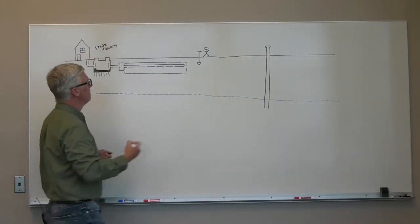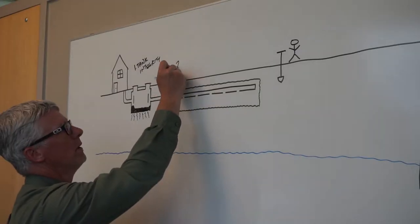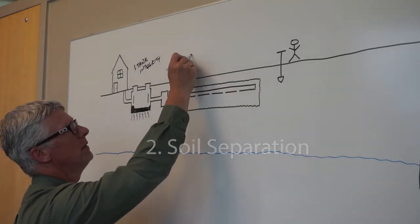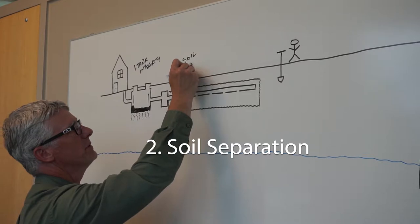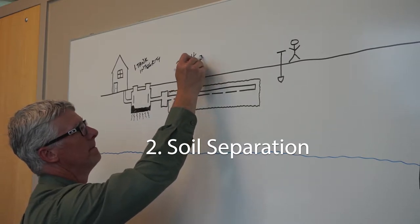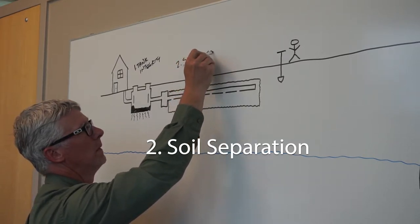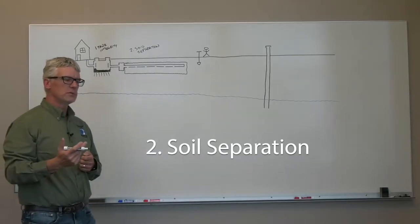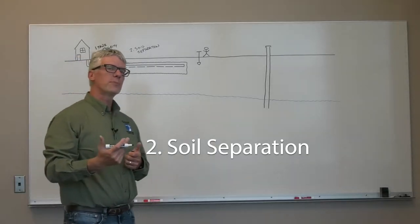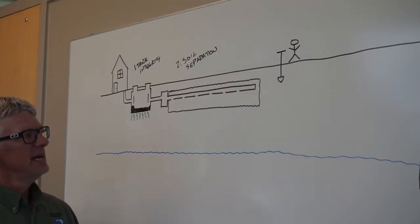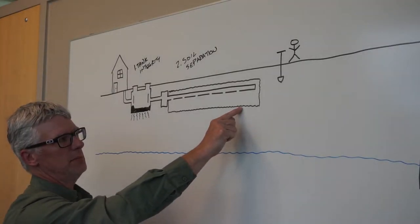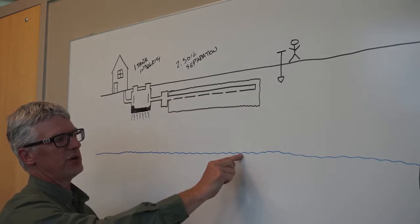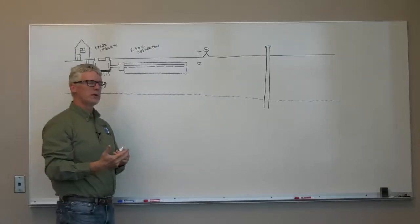Item number two is what we call soil separation, which you'll hear a lot of times what the professionals, the term that they'll use is vertical separation. What that is, is the distance between the bottom of the system and any type of restriction. Most often it's water table.